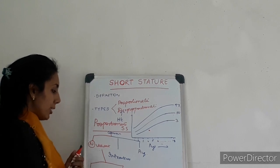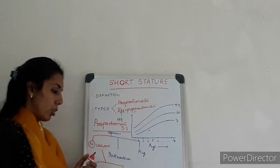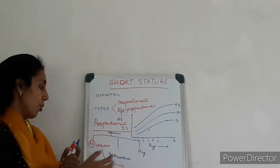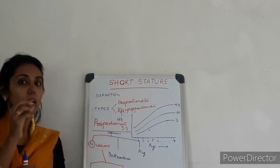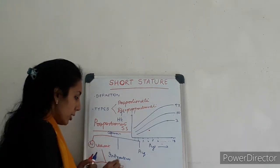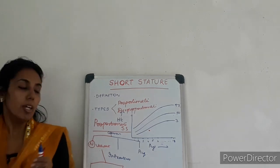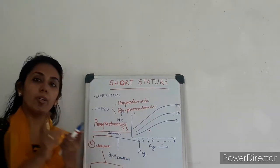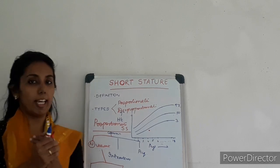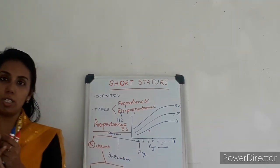Before going into this in detail, we will discuss a few causes of intrauterine proportionate short stature. Intrauterine causes include IUGR, intrauterine infections — any intrauterine infection will cause intrauterine growth restriction so the length will be restricted. Certain genetic syndromes like Turner syndrome, Down syndrome, Seckel's syndrome, etc. So intrauterine causes can be intrauterine infections, intrauterine growth syndromes, IUGRs, etc.